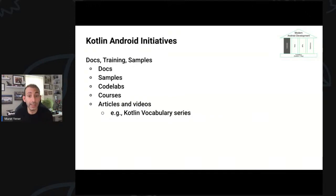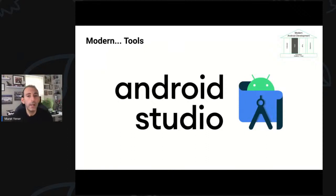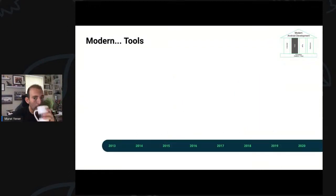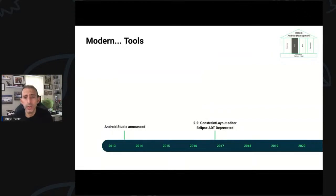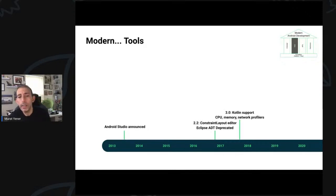Now let's move to a new topic: tools and Android Studio. If we again look at the timeline: in 2013, Android Studio was announced. In 2016, the Constraint Layout editor was released, and ADT for Eclipse was deprecated. In 2017, Kotlin support was announced.